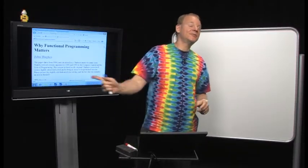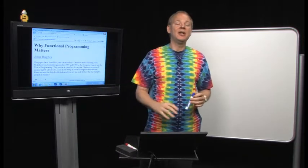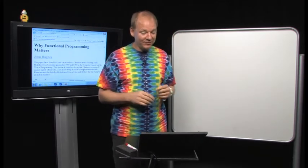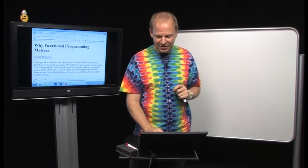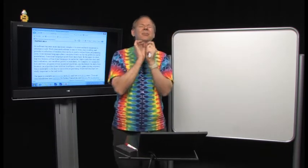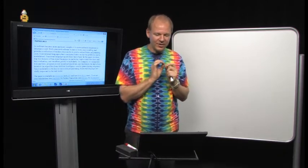Welcome everybody to number six of our lectures on functional programming. Today I want to start by pointing you at the best paper ever written on functional programming. It's called 'Why Functional Programming Matters,' from 1984, written by John Hughes. I can recommend all his papers, but this paper is especially influential for me because it explains exactly why pure lazy functional programming matters.